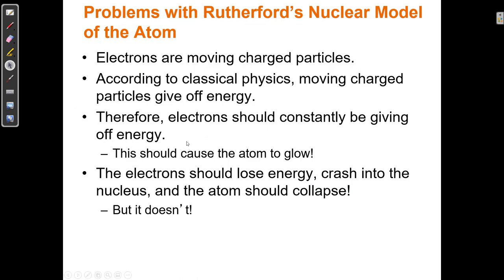Electrons are moving charged particles, and moving charged particles give off energy — they give off electromagnetic radiation. Therefore, electrons should be glowing, because they're giving off energy, and as they give off energy they should be slowing down. The atom should collapse because the electron would crash right into the nucleus. But because we know that doesn't happen and everyday objects are not glowing, there must be something wrong with this theory — either the theory itself, or the classical physics of the day.